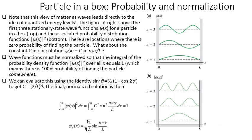An important part is the probability distribution function psi* times psi. The view of matter as waves leads directly to quantization of energy levels. The figure shows the first three stationary state wave functions psi(x) for the particle in a box, and the associated probability distribution function psi* psi, which is mod of psi squared. There are locations where there is zero probability of finding the particle.